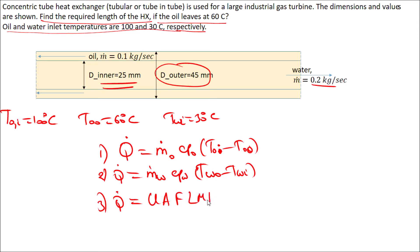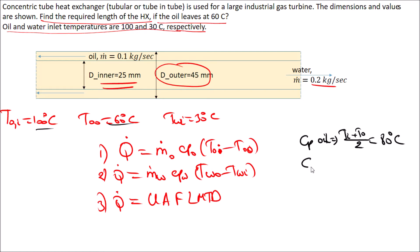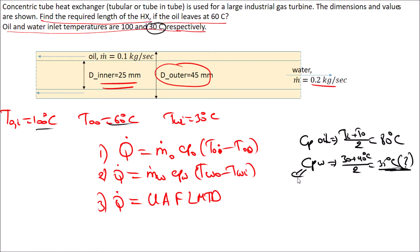First we need Cp values, which require average temperatures. For oil, the average temperature is (T_inlet + T_outlet)/2 = (100 + 60)/2 = 80°C. For water, we don't know the outlet temperature, so we assume an average of about 35°C — assuming inlet 30°C and outlet around 40°C. We will verify this assumption at the end. Cp of water doesn't change much with temperature, so the values will be acceptable.